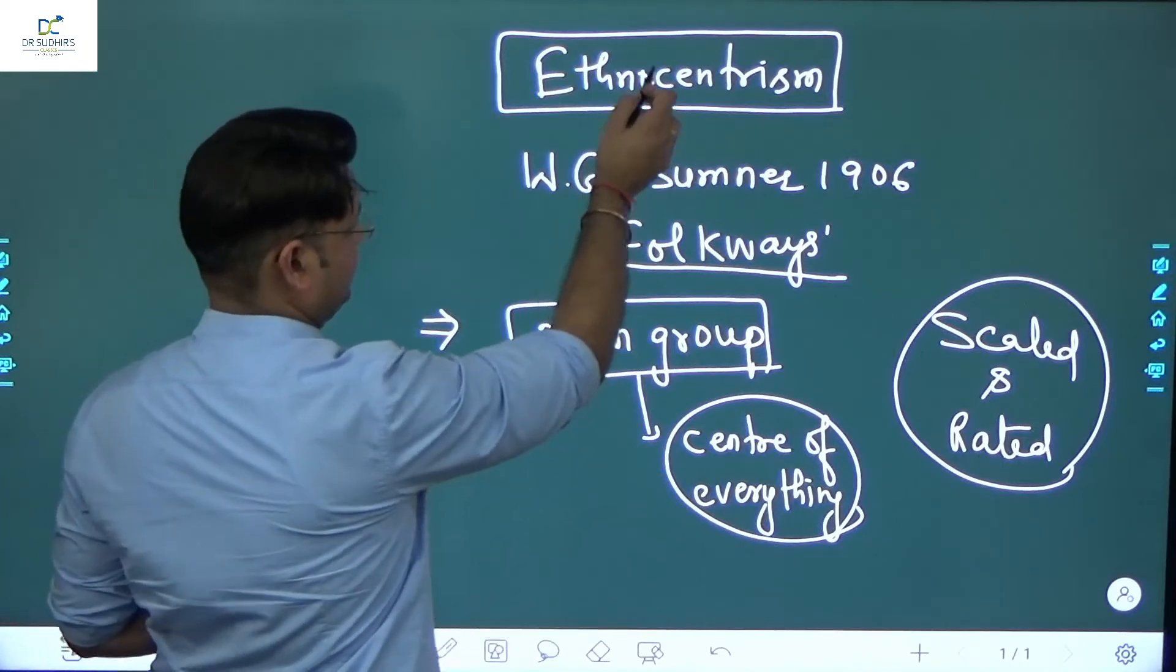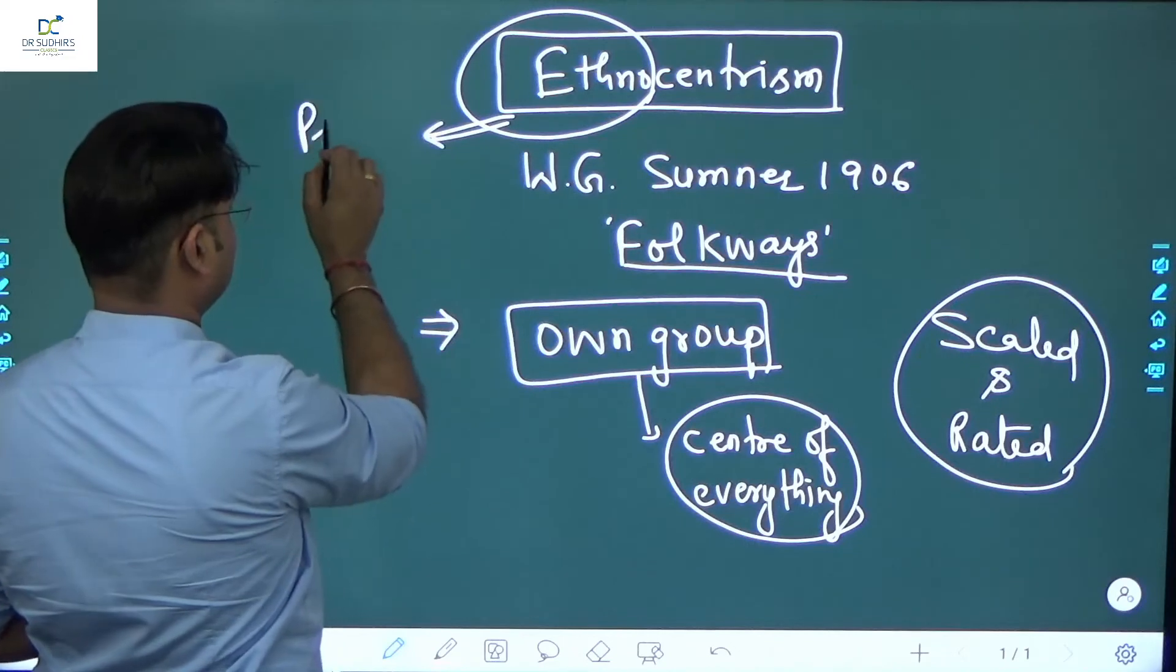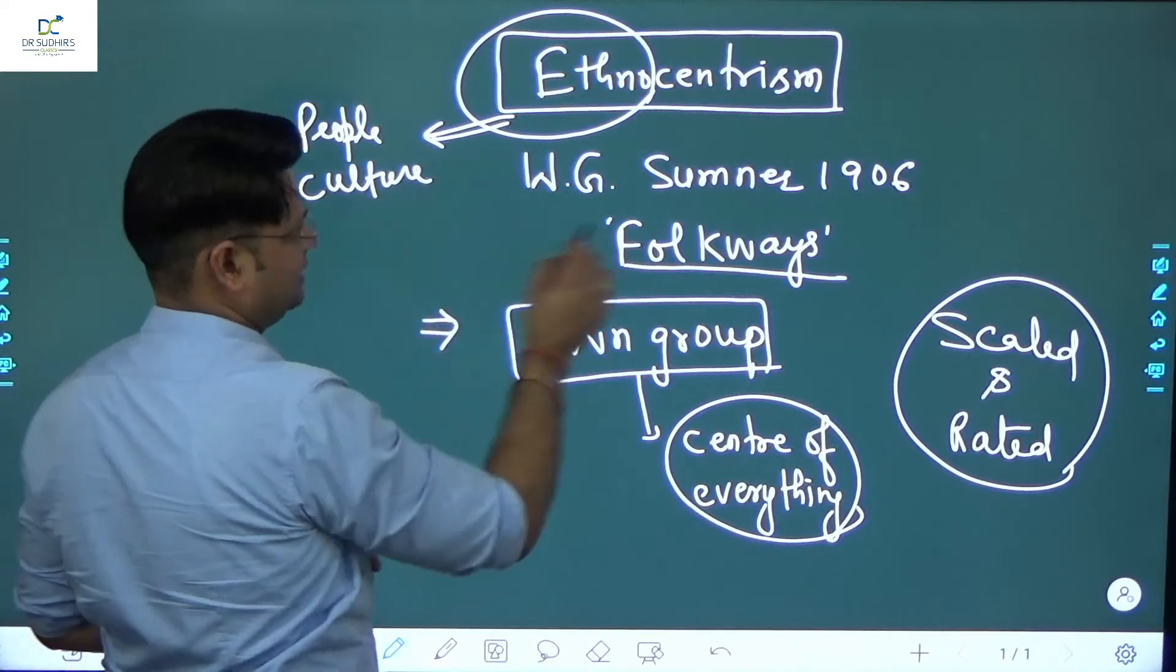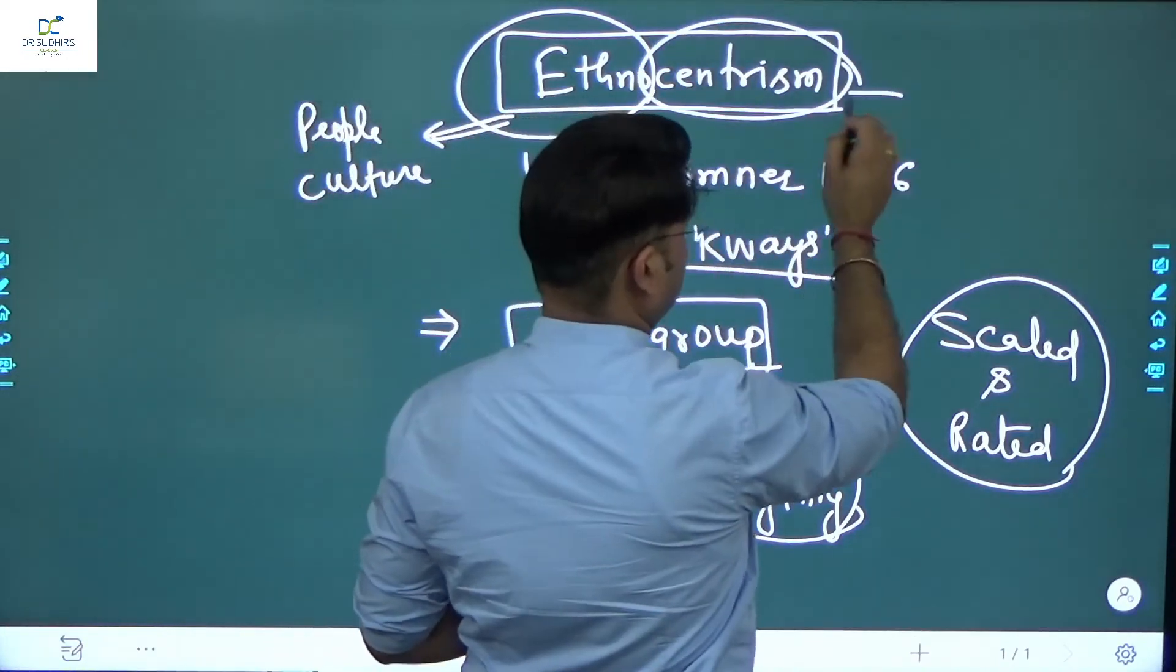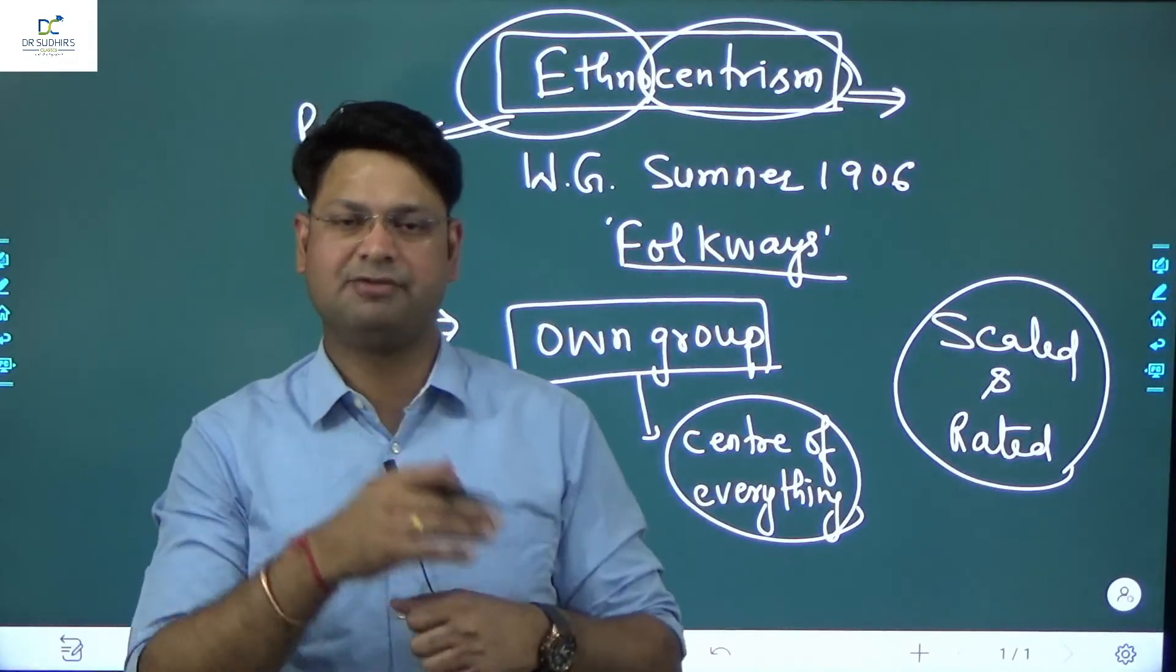You can break it etymologically: ethnos means people or culture, and centrism means that people and their culture is the center of everything.